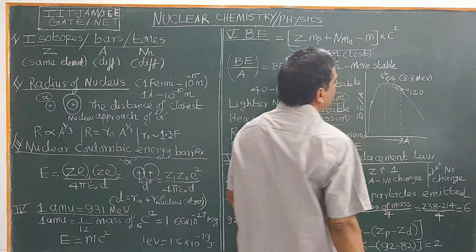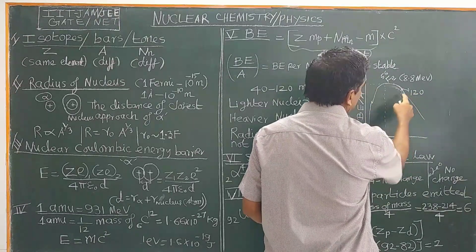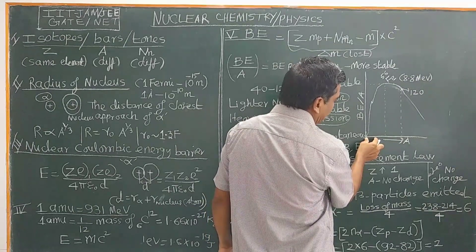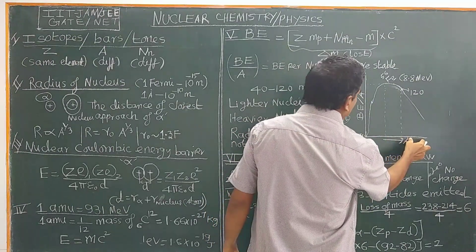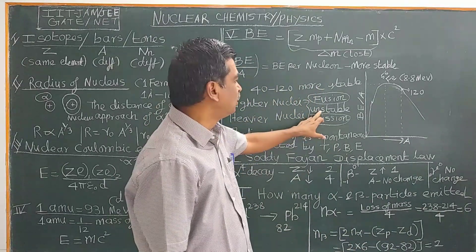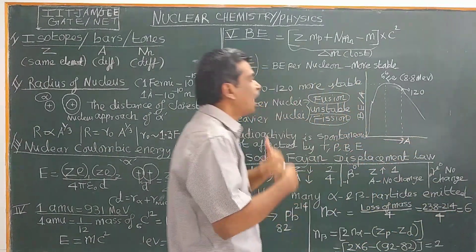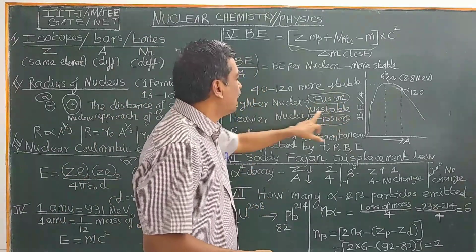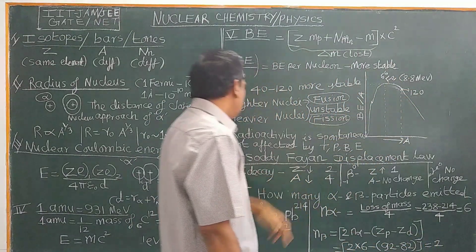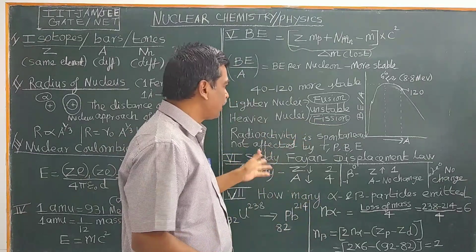After mass number 120, the binding energy per nucleon decreases. Lighter nuclei and heavier nuclei both have lower binding energy per nucleon — meaning they are less stable. Therefore, lighter nuclei undergo fusion and heavier nuclei undergo fission to form the most stable nuclei around iron. Heavy nuclei are radioactive because of this instability.